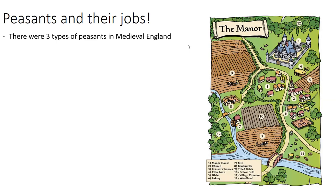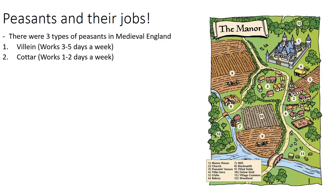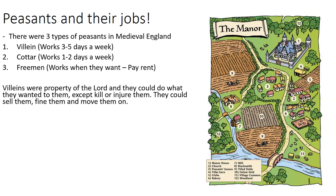There were three types of peasants in medieval England: the villein who works three to five days a week, the cotar who works one to two days and has their own plot of land and house, whereas the villein mainly gets land because they're working it for the lord of the manor. The villeins were the property of the lord — the lord could do whatever they wanted apart from kill or injure the villein. They could sell them, fine them, and also move them to another village.